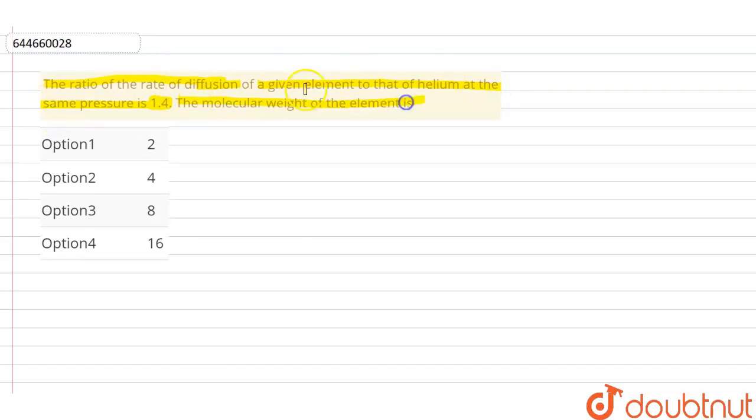So now we will let this element be 'e'. Now we know that according to Graham's law, the rate of diffusion r is inversely proportional to the square root of molar mass of the gas.